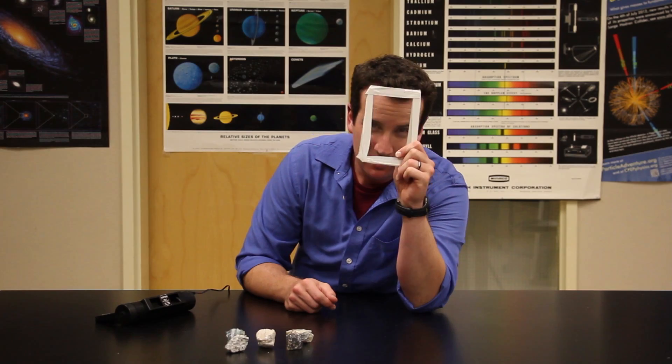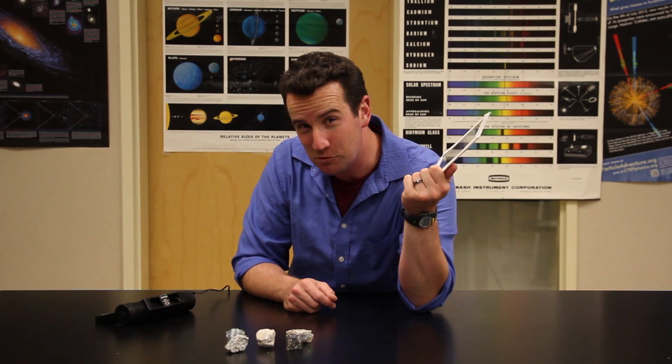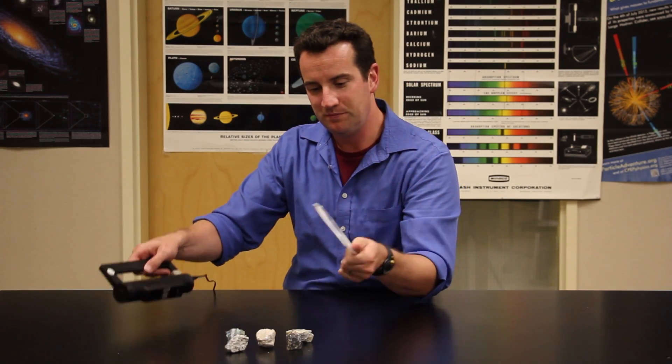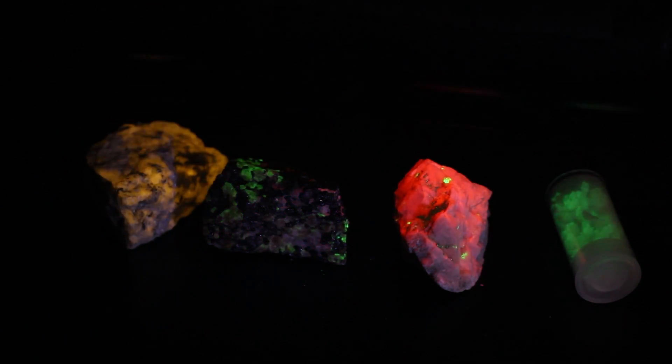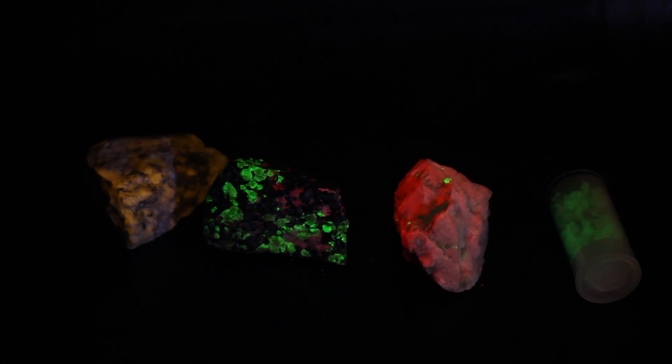Unlike visible light, ultraviolet light is sometimes blocked by glass. These fluorescent rocks glow in multiple colors when exposed to UV. But this clear glass pane prevents much of this. Some of the UV still gets through though, but not all.